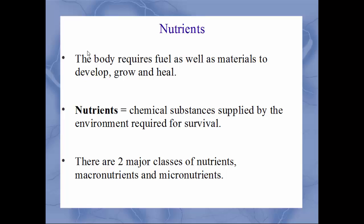First we'll talk about nutrients. Of course the body will require fuel as well as other materials to help heal and grow and develop. The formal definition for nutrients: these are chemical substances that are supplied by the environment through your diet that are required for survival. There are two main classes of nutrients: macronutrients and micronutrients. Macro means large, micro means small.